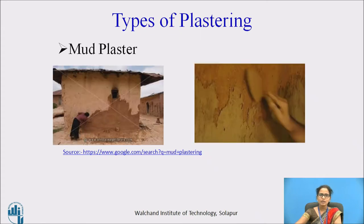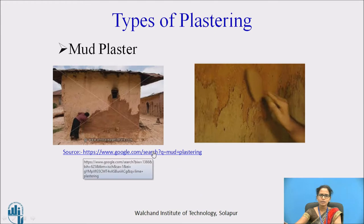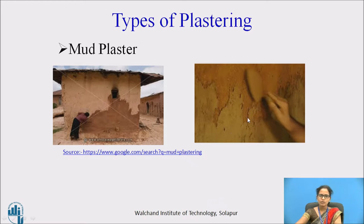Next, we have the mud plaster. Mud plaster is somewhat similar to lime plaster and cement plaster. It is applied in 2 coats. The thickness of the 1st coat is 18 mm, and the thickness of the 2nd coat is 6 mm.